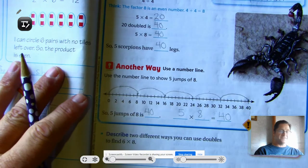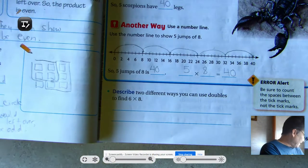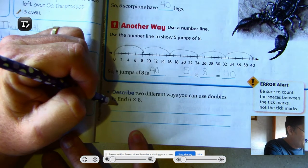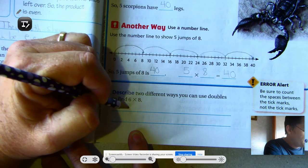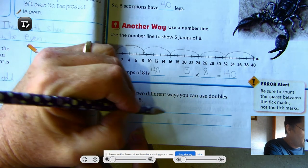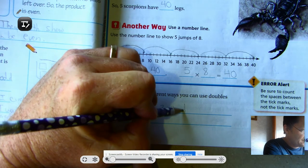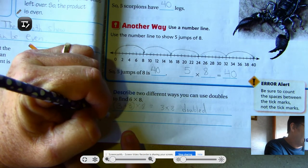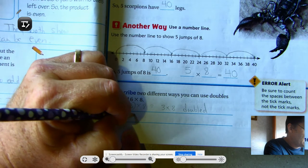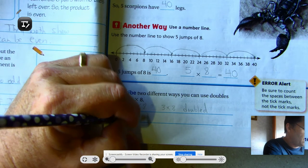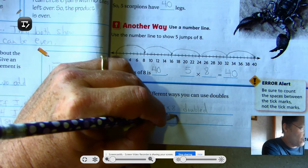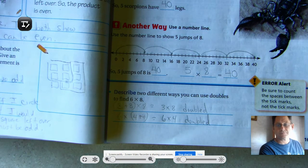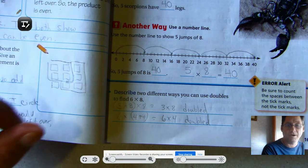Describe two different ways you can use doubles to find 6 times 8. So this is an interesting problem because we could say 3 plus 3 times 8, which would equal 3 times 8, doubled. Or, we could say 6 times 4 plus 4, which would be 6 times 4, doubled.